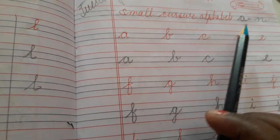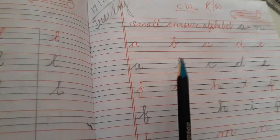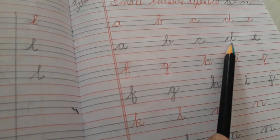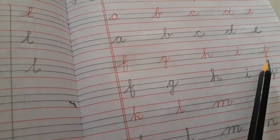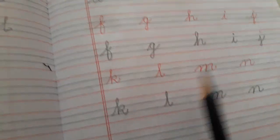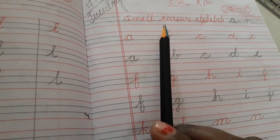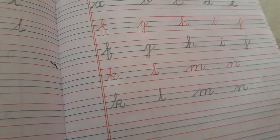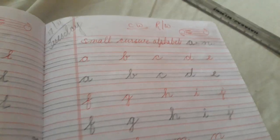Small cursive alphabet 'a' to 'n': a, b, c, d, e, f, g, h, i, j, k, l, m, n. Aapko cursive alphabet 'a' to 'n' aapne copy me likhna hai. Write in your notebook, okay? Understood everyone? Bye bye.